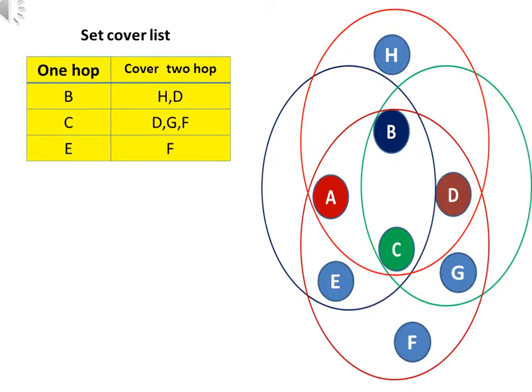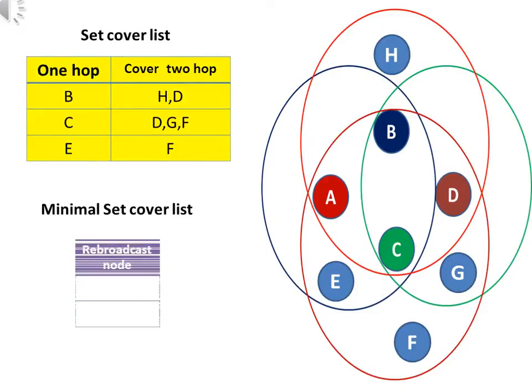So, we have got the set cover list from the previous slide. Let's minimize this set cover list and form a new list that will be the rebroadcasting list. We can see in the set cover list, nodes B and C cover all two-hop neighbors.